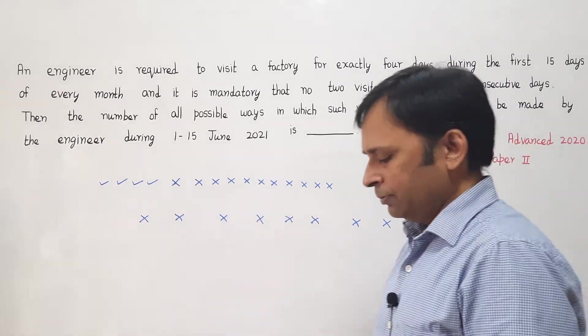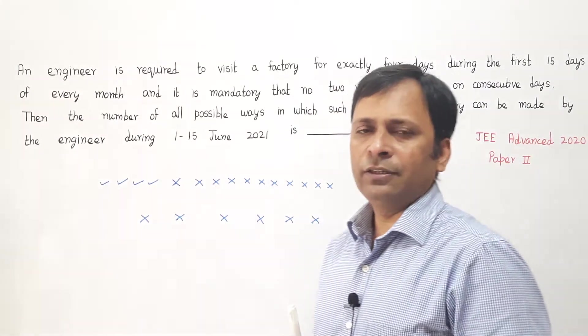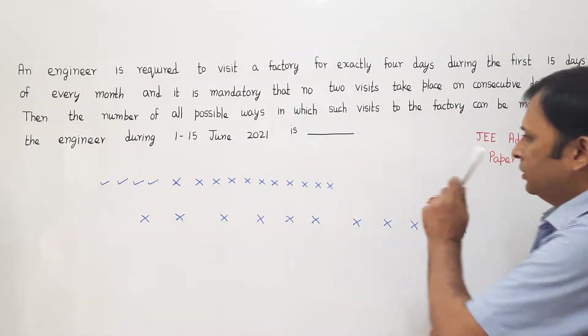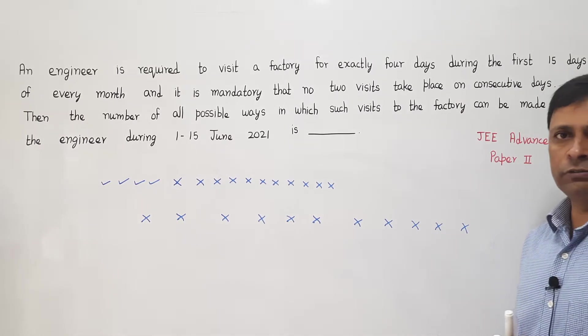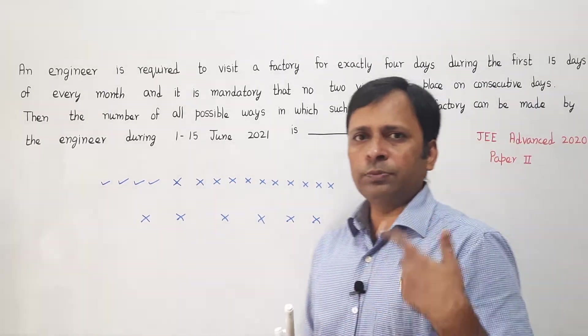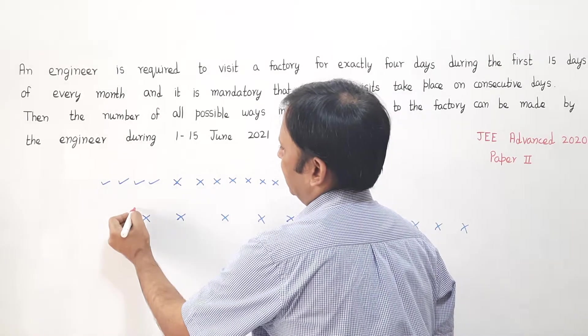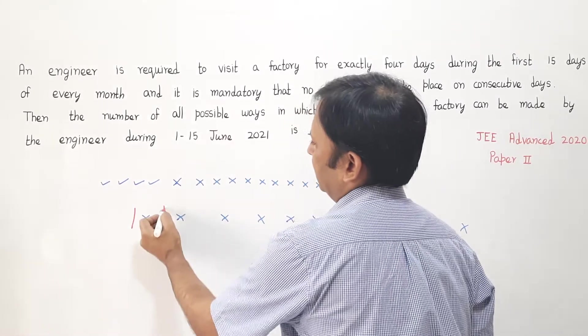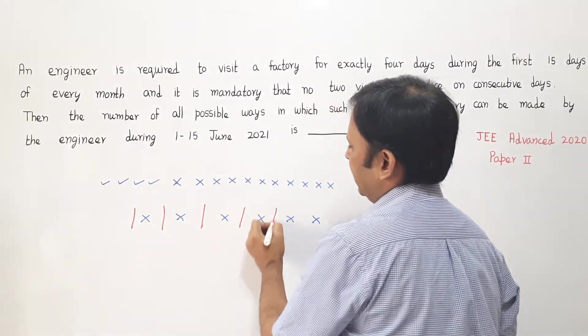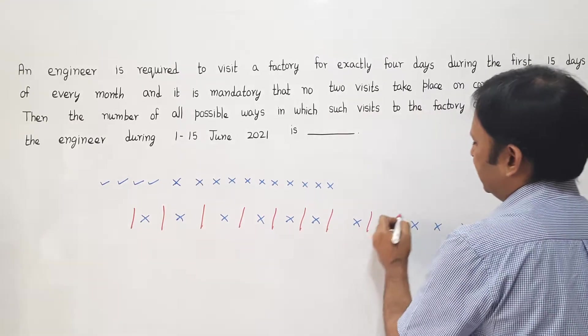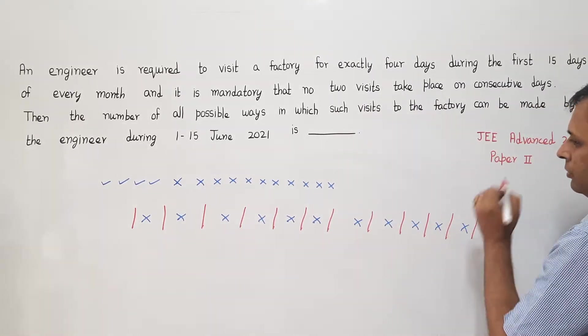Now I have to put the ticks in such a way that no 2 ticks should be consecutive. That means what are my allowed positions for keeping a tick? I can put a tick over here, here, here...